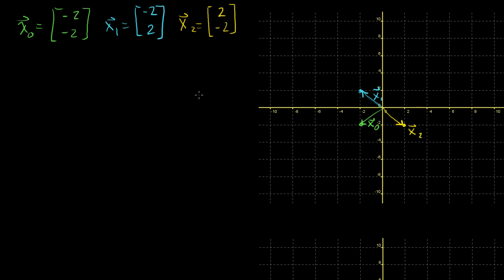What I want to do is define the line segments that connect these points. So let's say my first line segment is L0, and I want it to be the line segment that connects x0 to x1. I want to find the set of all position vectors that define points on this line. We could start off at x0, and then x0 plus scaled versions of the difference x1 minus x0. If you take x1 minus x0, you get that orange vector.